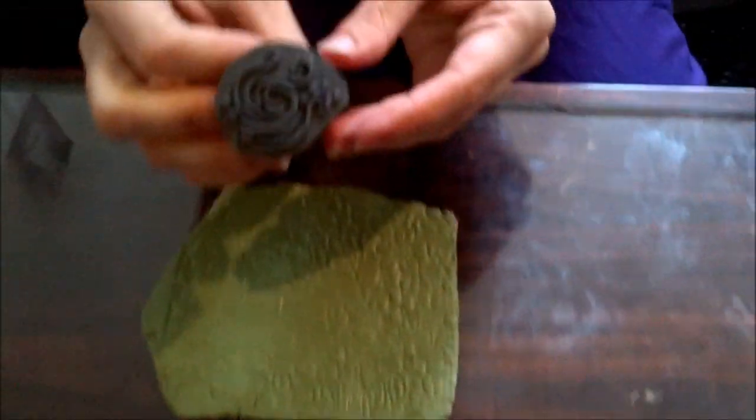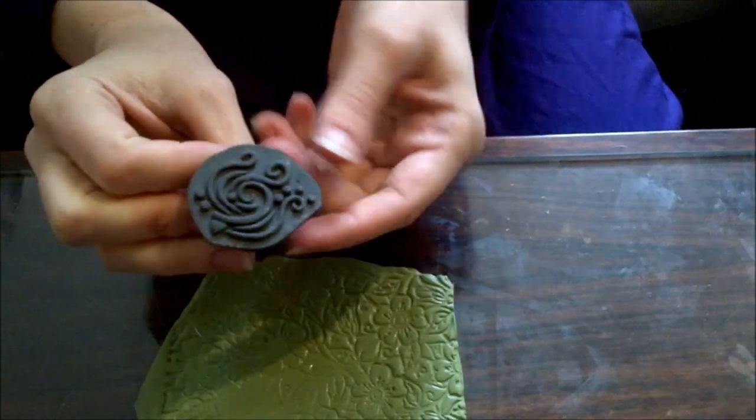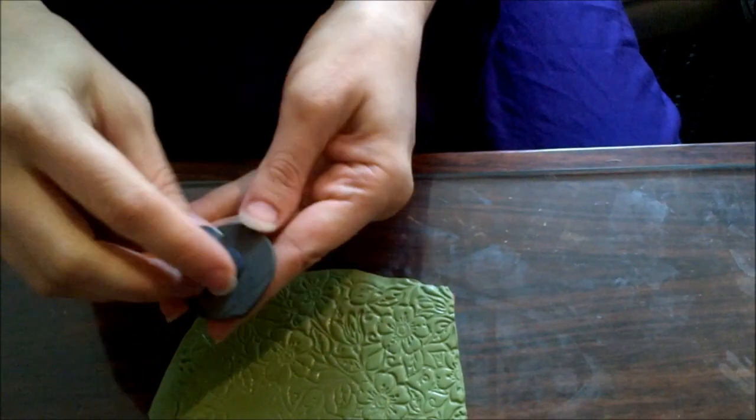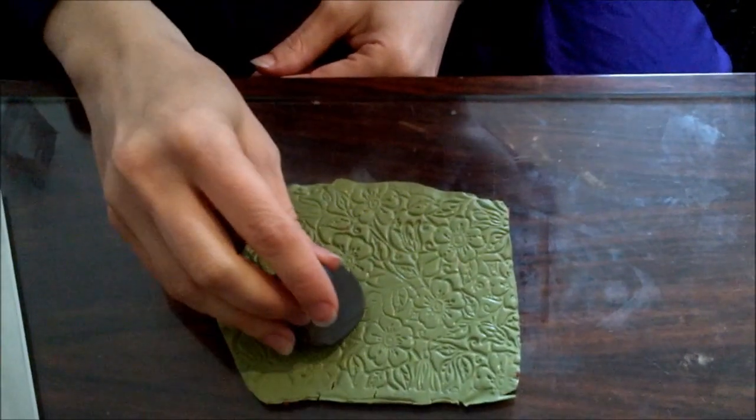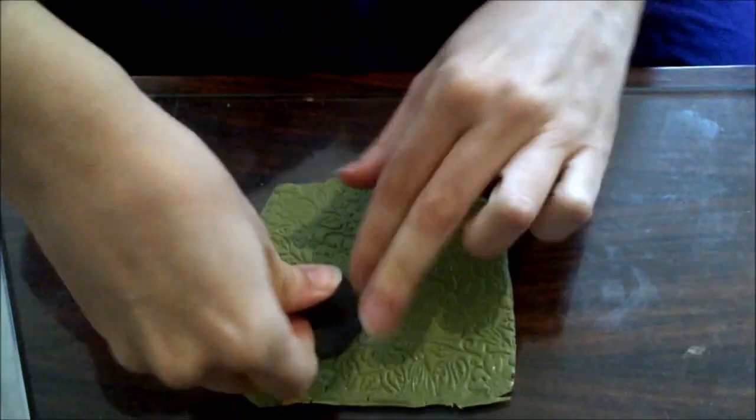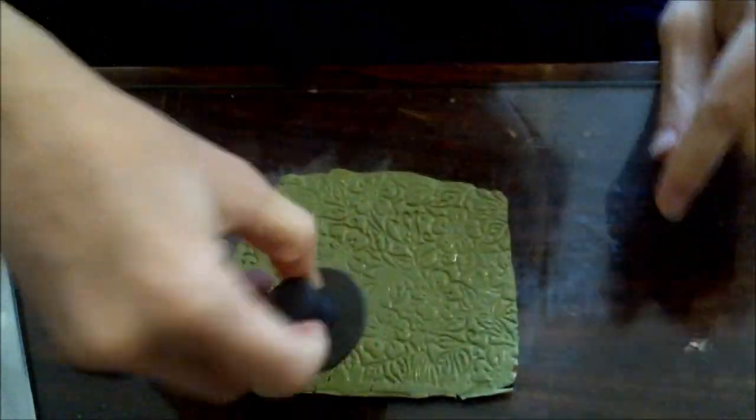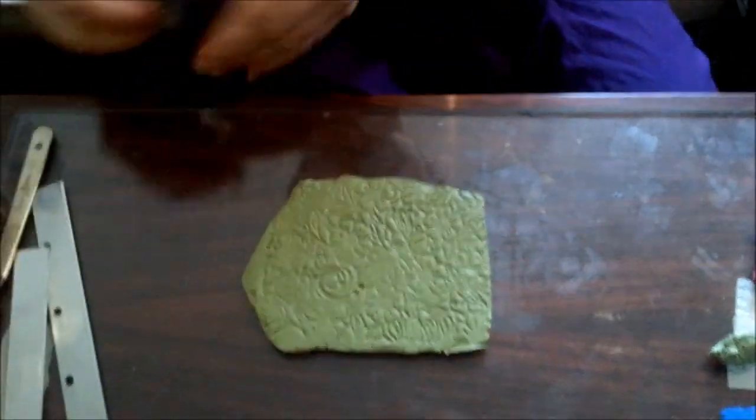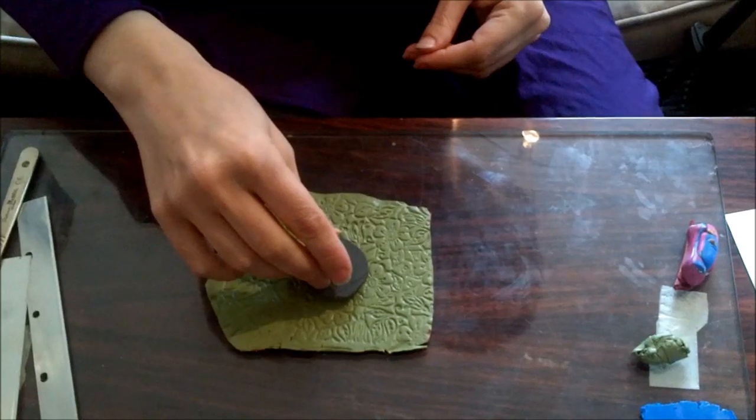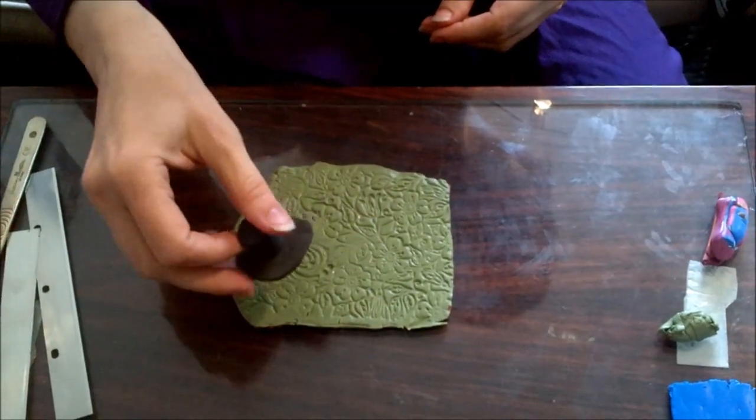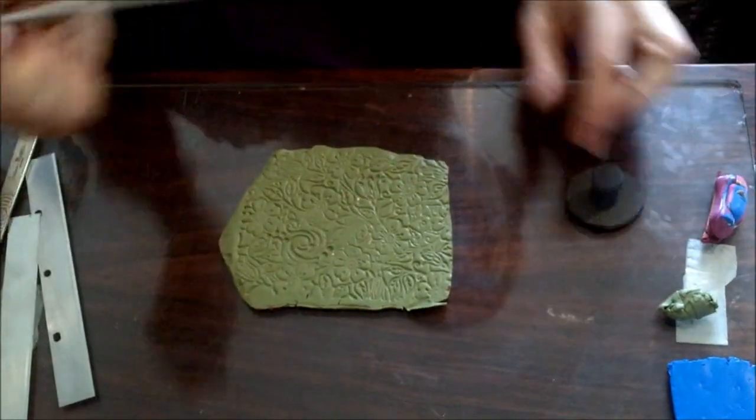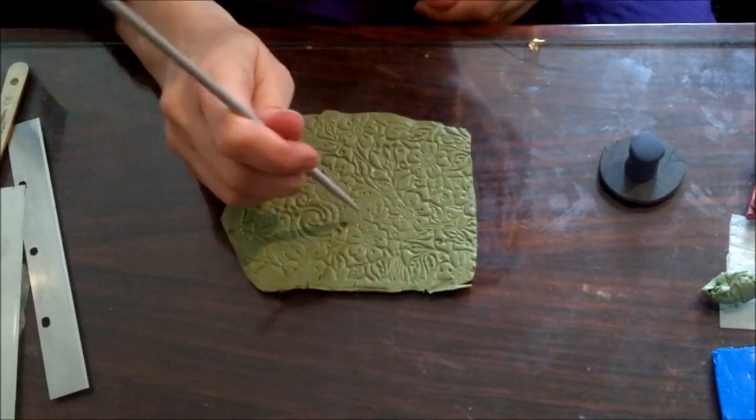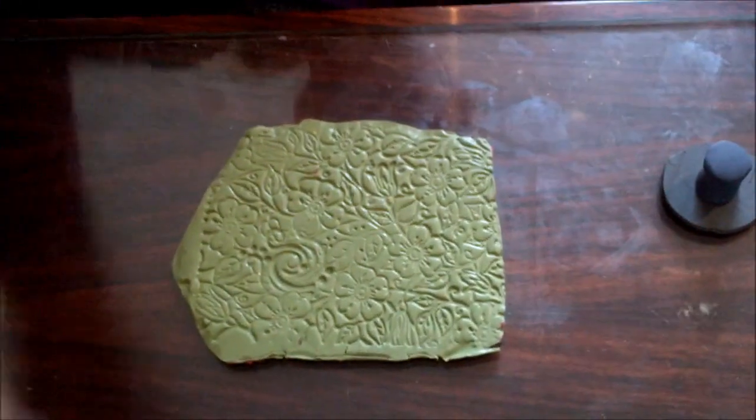This is a stamp I made myself using the polymer clay. So I just had a flat sheet and I made some little snakes which I stuck on and then made a handle. So you just want something interesting along the whole surface. Let me do another one here.